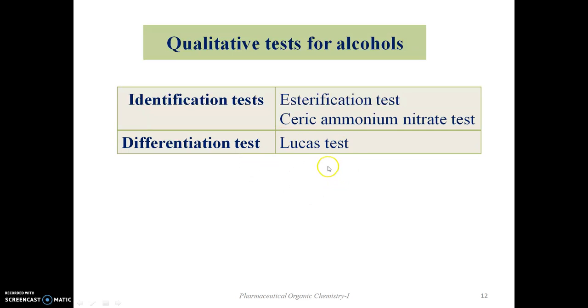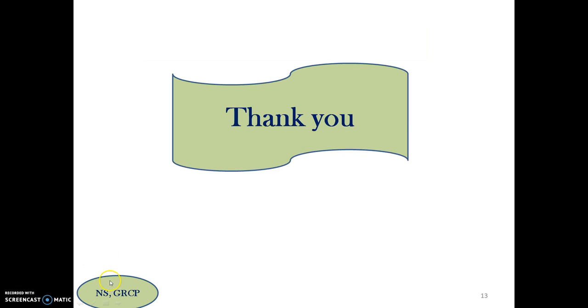In summary, the general identification tests for alcohols are the esterification test and the ceric ammonium nitrate test, and the differentiation test is the Lucas test, which distinguishes primary, secondary, and tertiary alcohols. In the next class we will see the methods of preparation and reactions of the alcohols. Thank you.